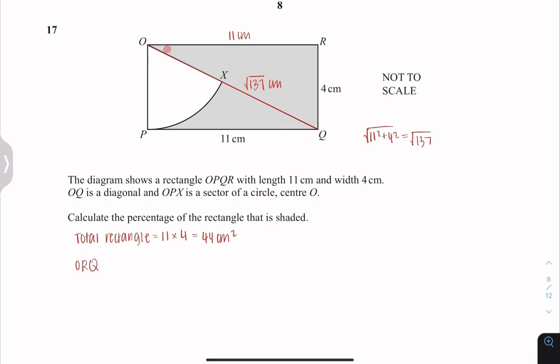To find the triangular ORQ, which is this one, just using the simple triangular area formula, which is 1 over 2 base times height. And the area is 22 cm squared. Now I'm going to find the area of this one, the sector.